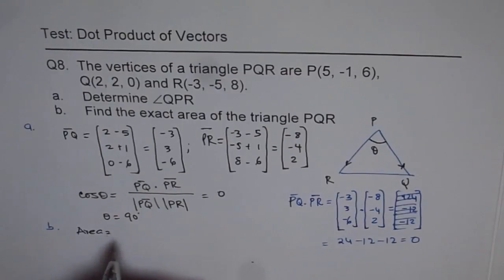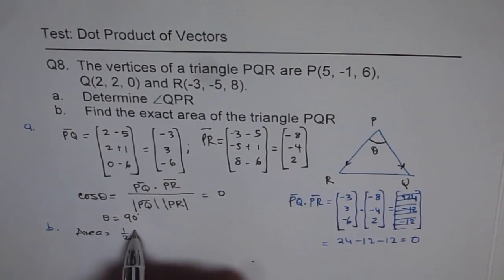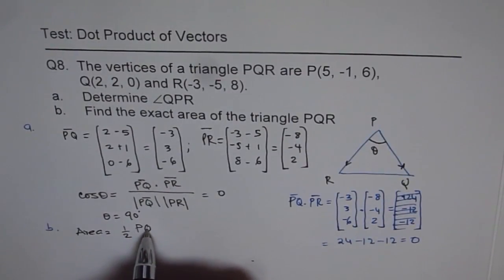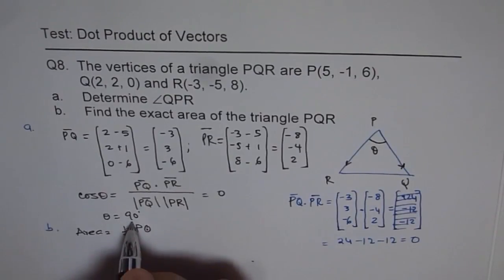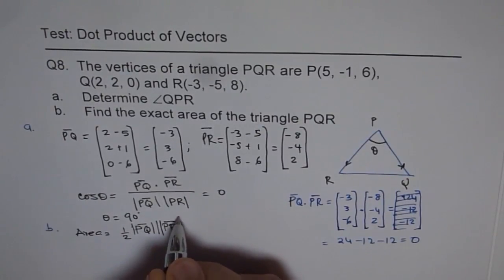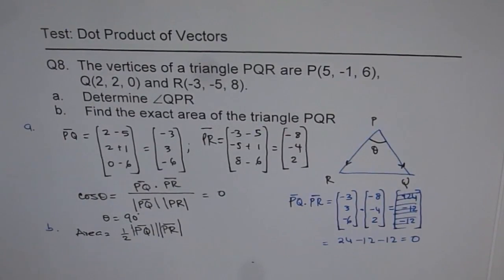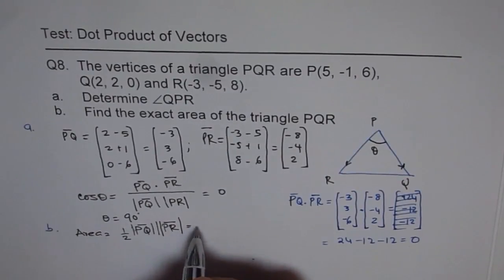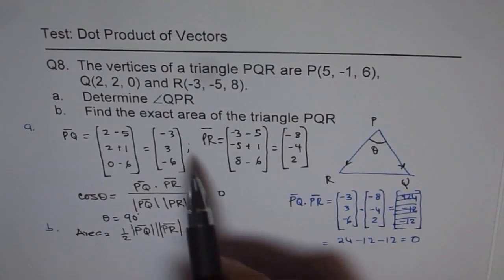So we have done part A. Let me write here - now part B is area. So area of the triangle equals to half magnitude of PQ times magnitude of PR. That's the area - area is a scalar quantity and then we can calculate this.